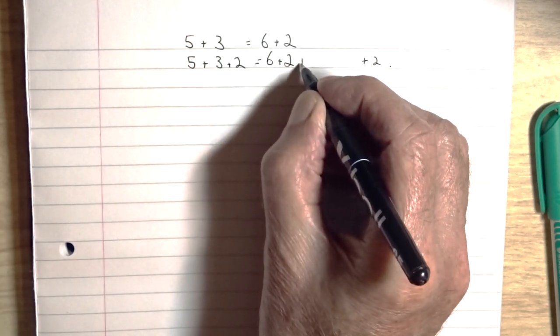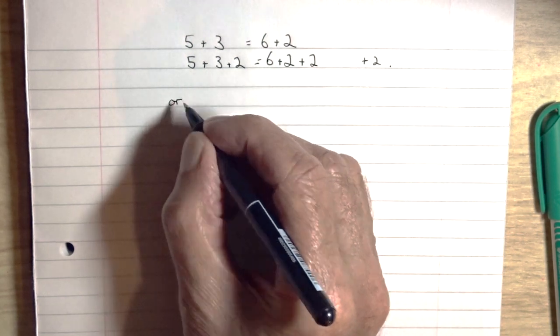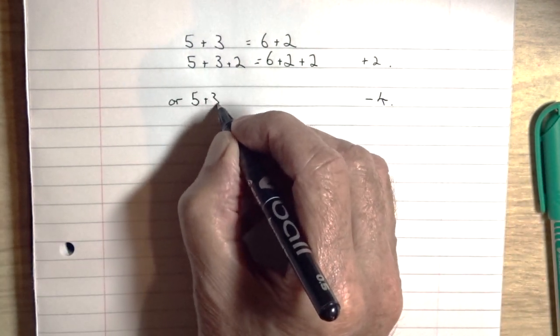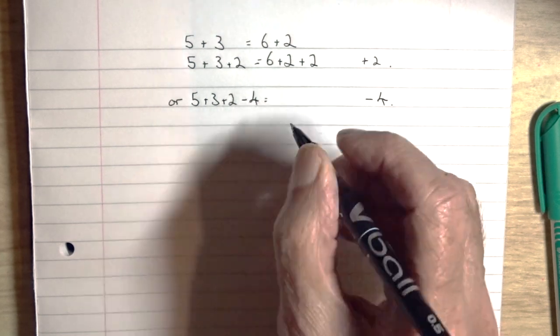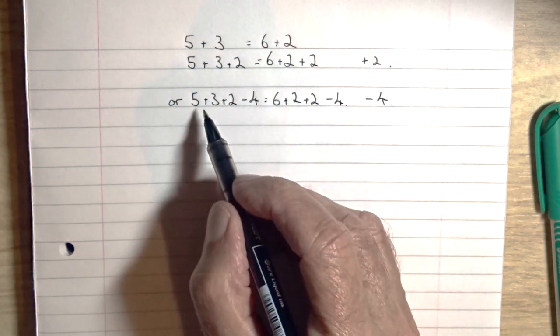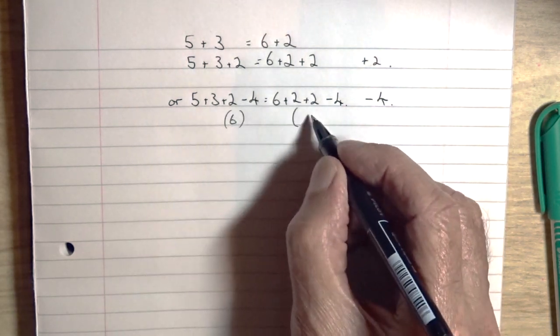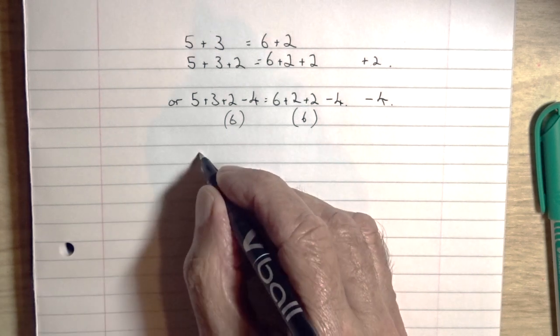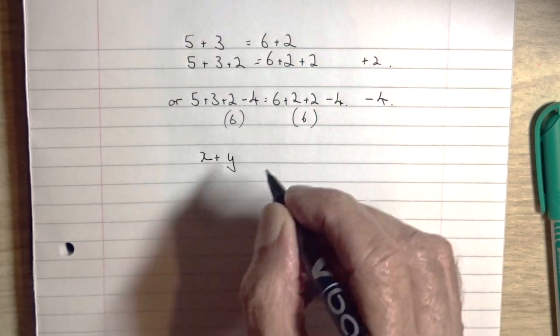So 5 plus 3 plus 2 equals 6 plus 2 plus 2, which is of course 10 on each side. If we subtract 4 from each side then the equation is still true, both sides add up to 6. The equation is still true, one side equals the other.